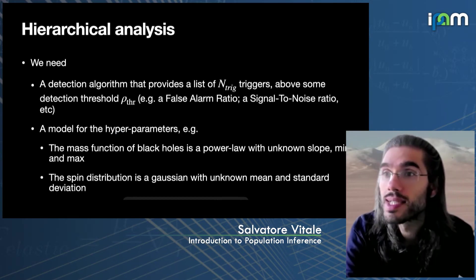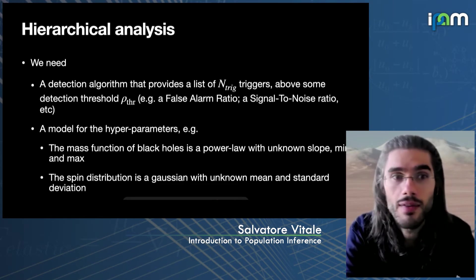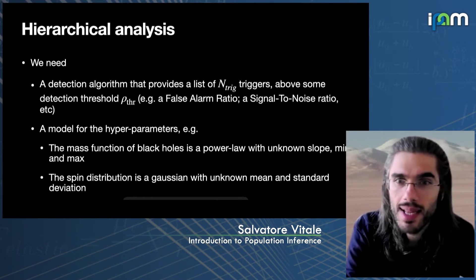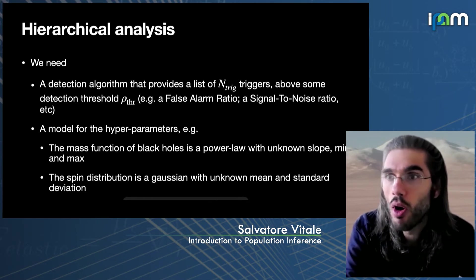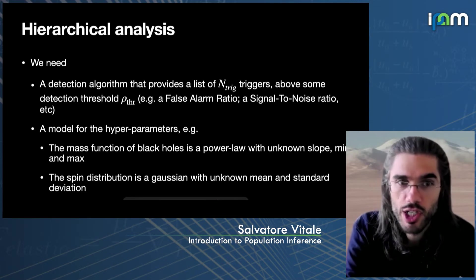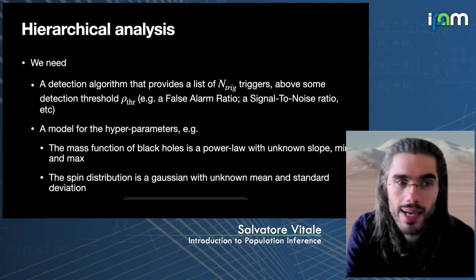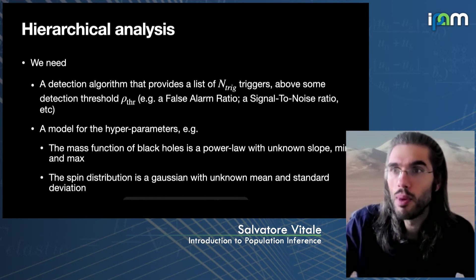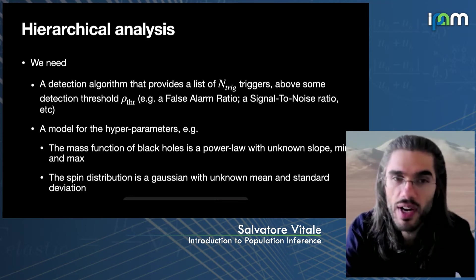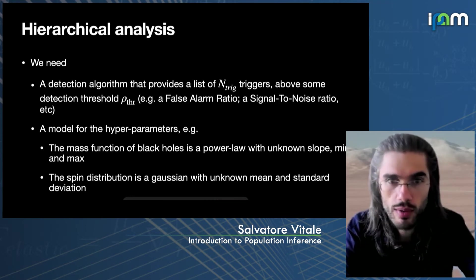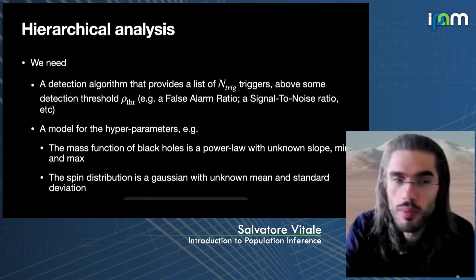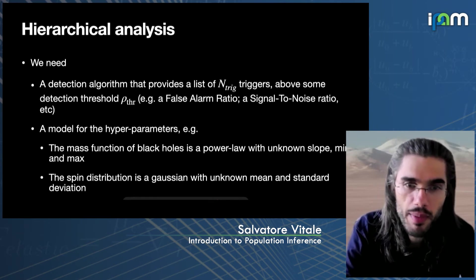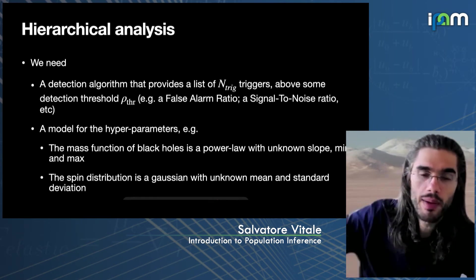What is needed to perform this type of analysis at a very high level is the following. We need first one or more algorithms that provide a list of triggers above some detection statistic threshold, which can be a false alarm rate, a signal-to-noise ratio, or something like that. This single bullet alone could have its own workshop. Then once you have that, you need a model for the hyper-parameters — the population parameters.